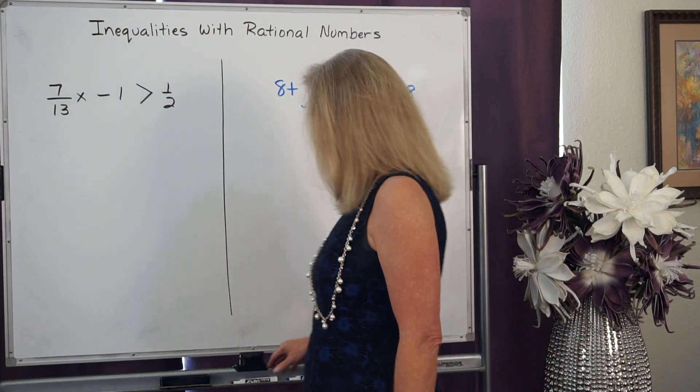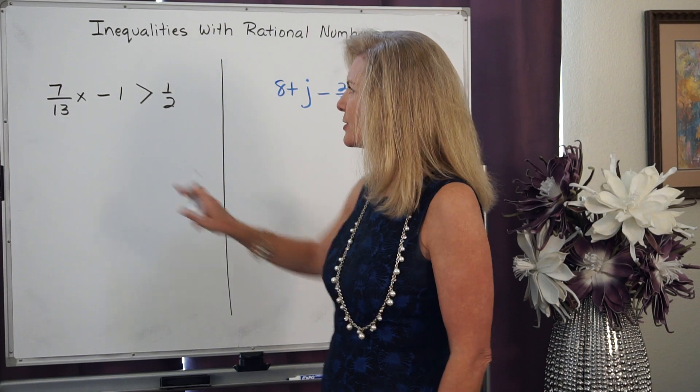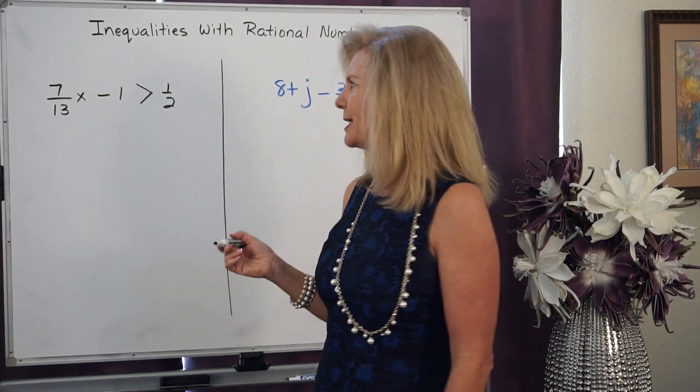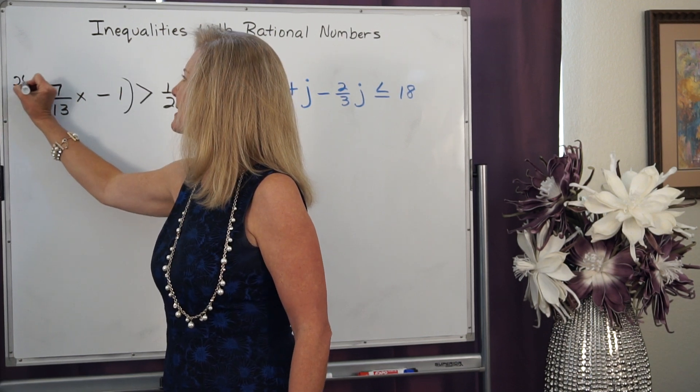And the way that you do that is you look for the least common multiple of those denominators. I know that 13 and 2 both go into 26. So I'm going to multiply both sides by 26.